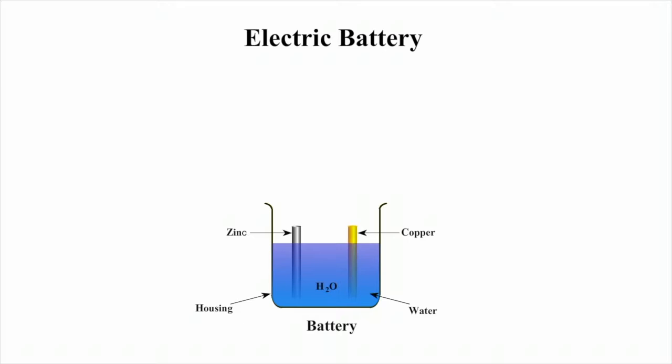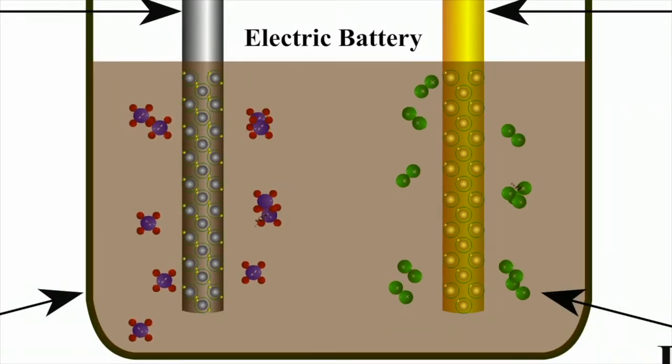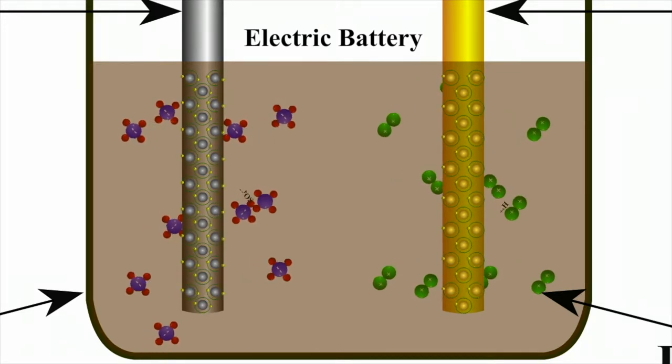This combination of two metals and an electrolyte creates a separation of charge so that one of the electrodes, the cathode, is positively charged and the other, the anode, negatively charged.